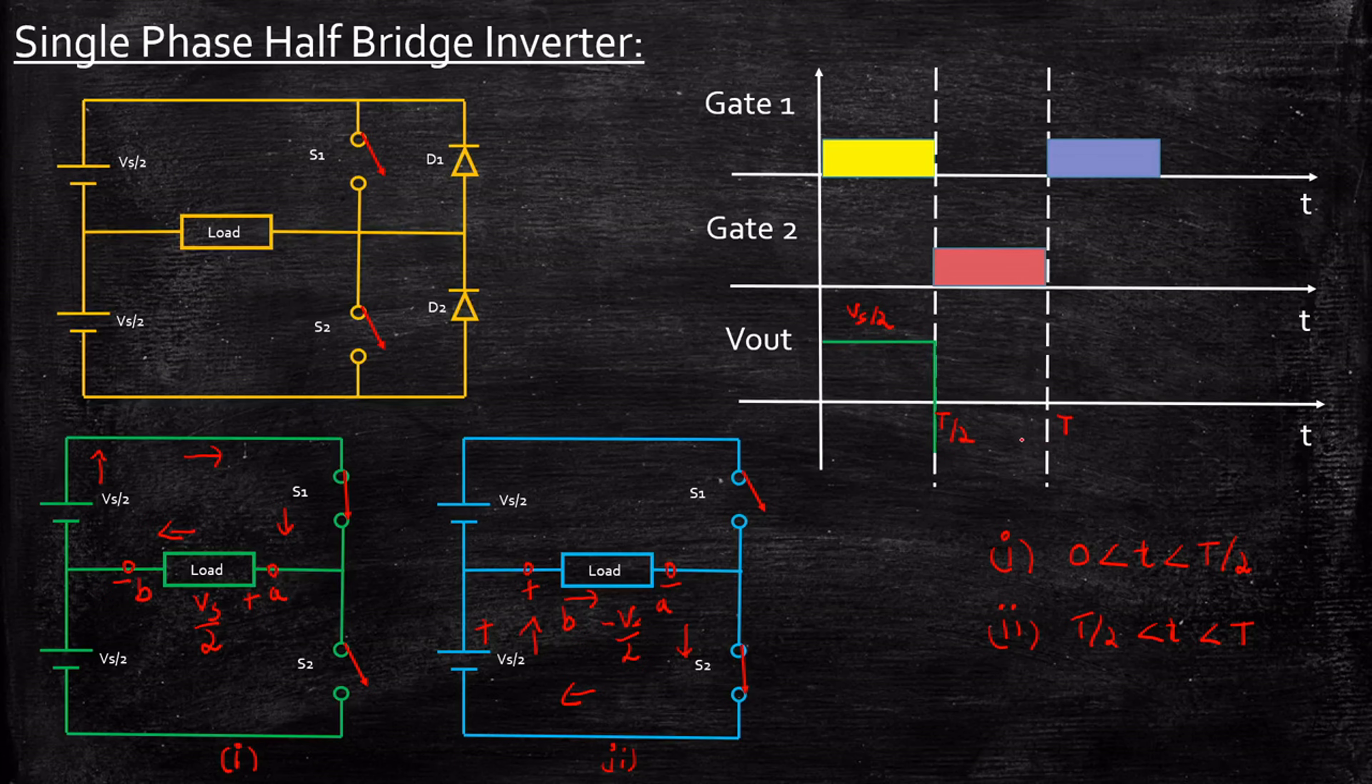During the next period from T/2 to T, the output voltage is going in the negative direction: minus Vs/2. So you're getting minus Vs/2 here, and the direction is reversed. Again, during the next cycle, you'll be getting Vs/2 because I'll be turning on S1 again, and the cycle repeats.